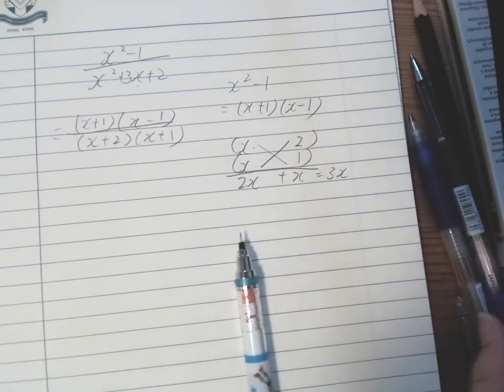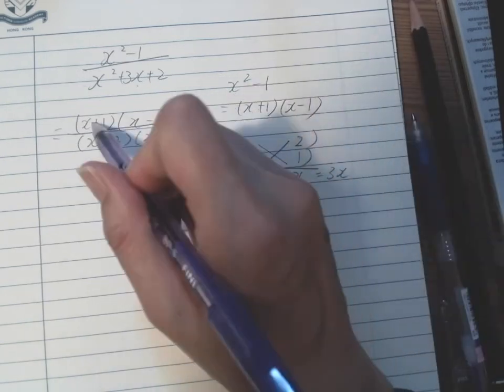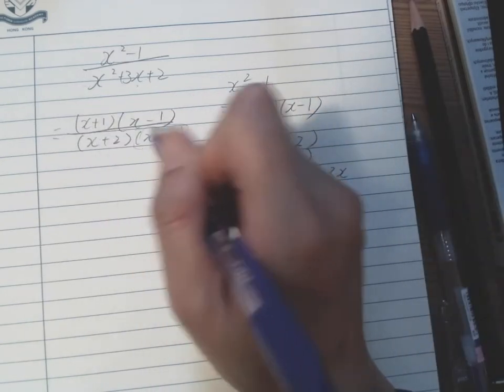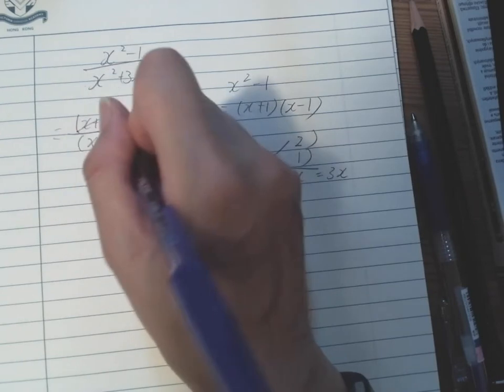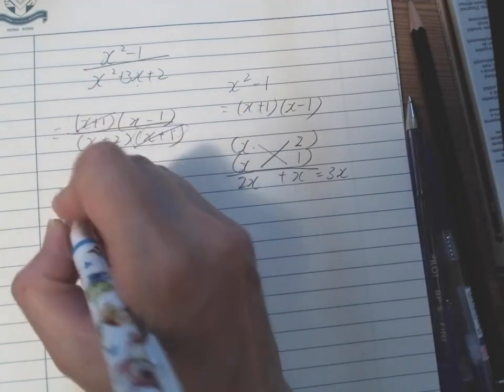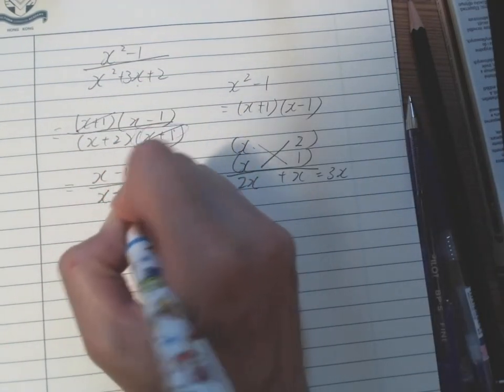Yay! Now we can simplify by canceling both common factors out. Both of them are multiplying (x plus 1), so we can cancel that out. This is our simplified fraction.